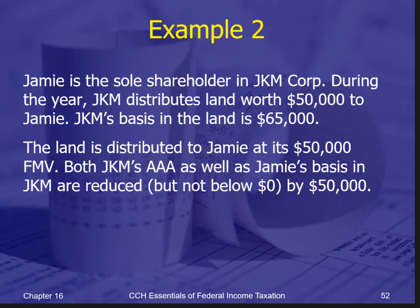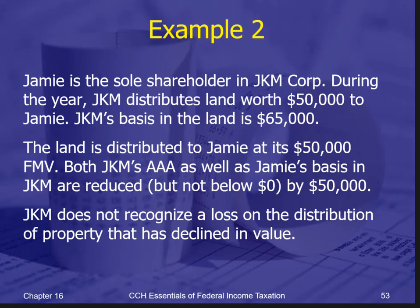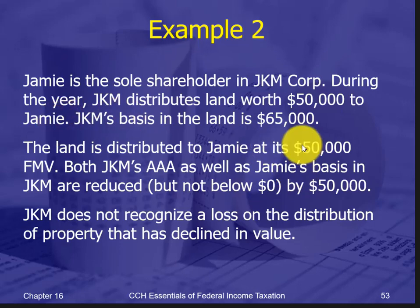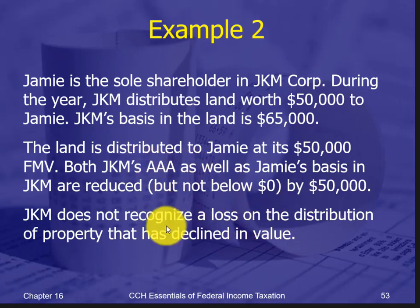The same idea applies when distributing property that has declined in value — except no loss is recognized. You always distribute at fair market value; that is the amount that reduces the AAA and becomes Jamie's basis. The shareholder receives no benefit from the loss — so the moral of the story is don't distribute property at a loss. That is the end of the narrated slides on S-Corporations.